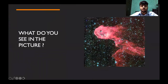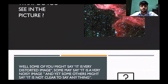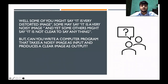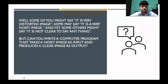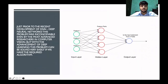What do you see in this image? Well, some of you might say it is a very distorted image, some may say it is a very noisy image, and yet some of you might say it is not clear to say anything. But can you write a computer program that takes a noisy image as an input and produces a clear image as an output? Just prior to the recent development of DNN, Deep Neural Network, this problem was inconceivable even by the most advanced researchers in computer vision.